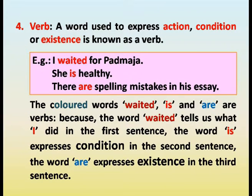Verb. A word used to express action, condition or existence is known as a verb. Examples: I waited for Padmaja. She is healthy. There are spelling mistakes in his essay. The colored words waited, is, and are are verbs. The word waited tells us about an action in the first sentence. The word is expresses condition in the second sentence. The word are expresses existence in the third sentence.